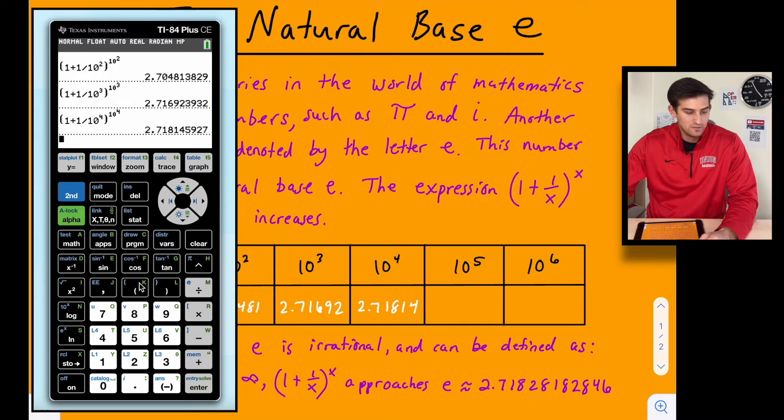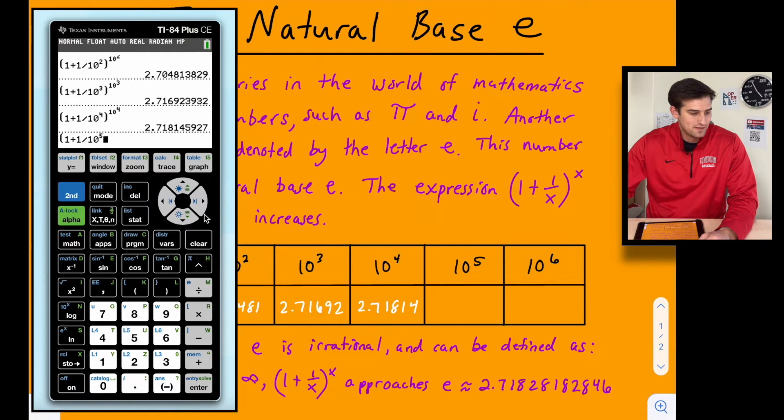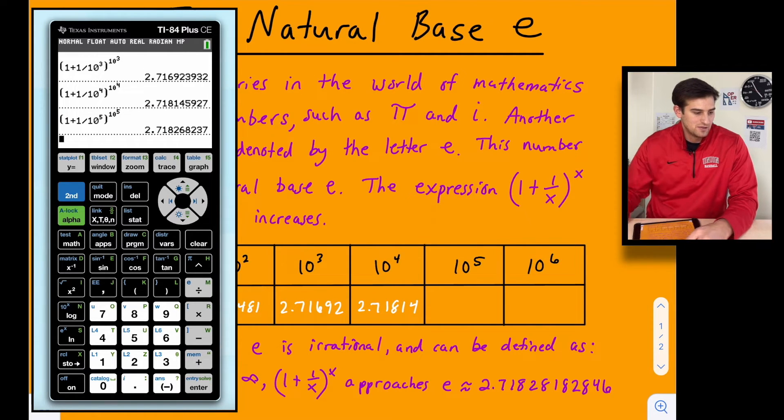Just a couple more here, and we'll be able to illustrate what we're trying to get across as far as what our decimal approximation approaches. So 1 plus 1 divided by 10^5. And once again, we will close the parenthesis and raise this to a power of 10^5. So here we get 2.71826.